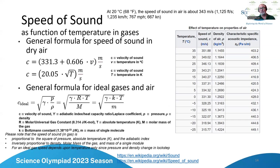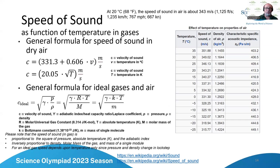Key takeaways: speed of sound is proportional to the square root of pressure, absolute temperature, and the adiabatic index; it's inversely proportional to density, molar mass of the gas, and mass of a single molecule. Most importantly, for an ideal gas — which most gases can be considered — the speed of sound depends on temperature only. This is because pressure and density change in lockstep in an ideal gas, so they cancel out. Doubling pressure doubles density, halving pressure halves density, so changes cancel. Changing temperature: yes, that changes the speed of sound.